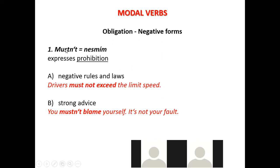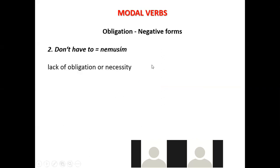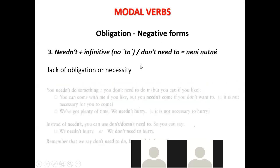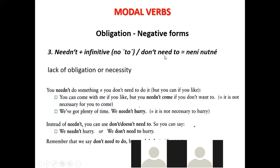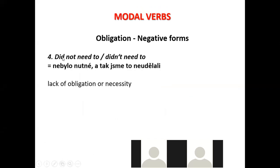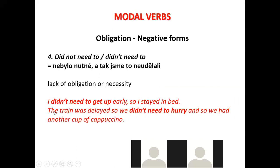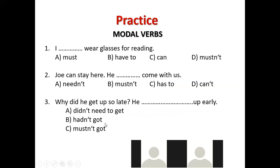Must can only be used in the present tense — jenom v přítomném čase. In the past, 'must' becomes 'had to,' and in the future it becomes 'will have to.' So: 'I must do something' — present; 'yesterday I had to do it'; 'tomorrow I will have to do it.' We just use 'have to' for past and future. Also, in the past you can say 'I didn't need to get up early, so I stayed in bed' or 'The train was delayed so we didn't need to hurry.'